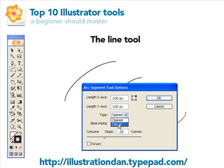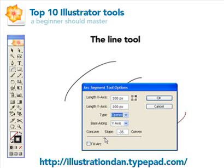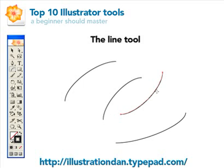You can keep the arc open or close it — closing it basically gives it a square where it closes the two points, so we'll keep it open. The slope setting makes it either concave or convex. Concave is pointing outwards, convex the other way. It's pretty good to leave it around negative 35, and it automatically makes your arc.